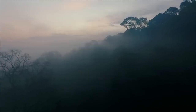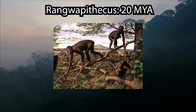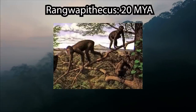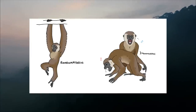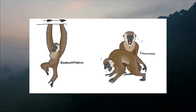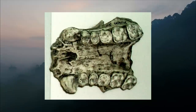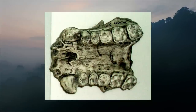Alongside Proconsul and Ekembo was a genus known as Rangwapithecus. This ape, by and large, looked very similar to Proconsul and Ekembo, with the primary differences being found in its teeth. Rangwapithecus is noted as being monomorphic in its canine teeth, meaning males and females had canines of the same height — much like gibbons, humans, tamarins, or marmosets — and that these canine teeth were blade-like and adapted for shearing, suggesting investment in folivory as well as frugivory, and a social system oriented around single-pair family groups.